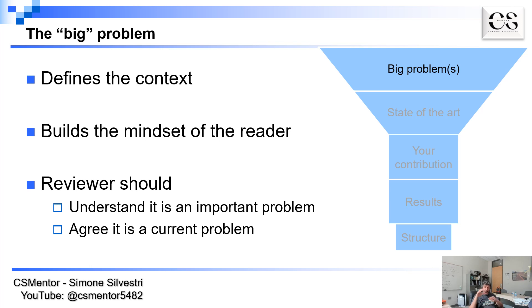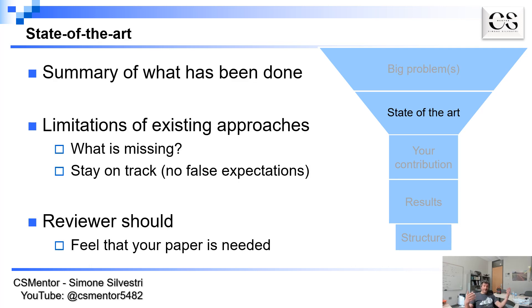One thing you definitely want to get out of these first couple of paragraphs is that the reviewer agrees this is an important problem that deserves to be studied, and second that the problem is current. I cannot stress enough how many papers get rejected because reviewers think the problem studied is not worth studying now, is not important, is not relevant, or has already been solved before.